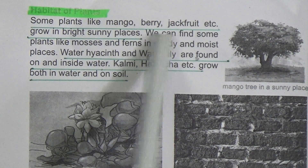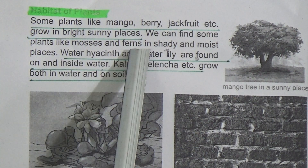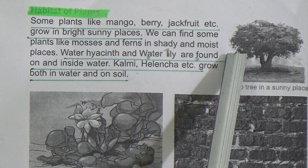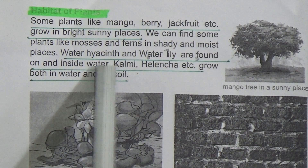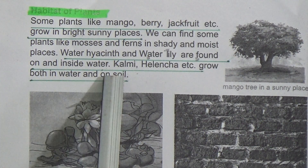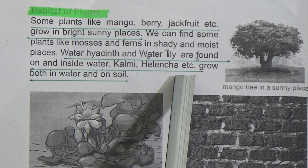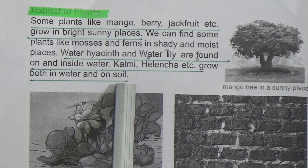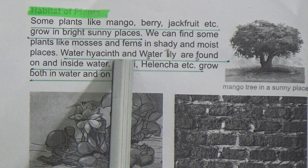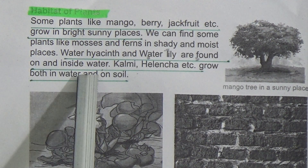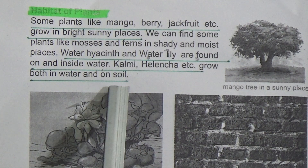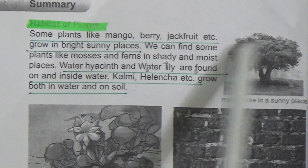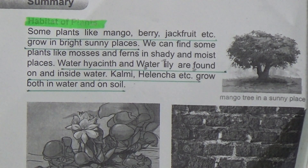Habitat of plants: some plants like mango, berry, and jackfruit grow in bright sunny places — underline this line. We can find some plants like mosses and ferns in shady and moist places. Water hyacinth and water lily are found on water. Kolmi, Helencha, etc., grow both in water and on soil — underline this line.